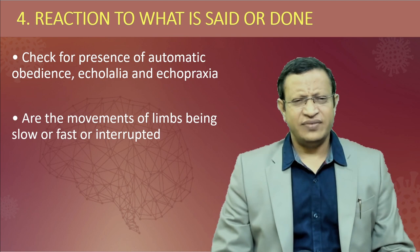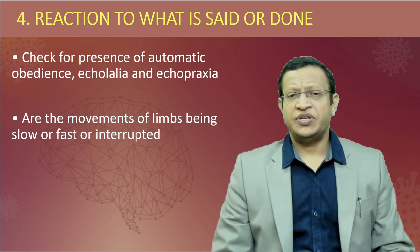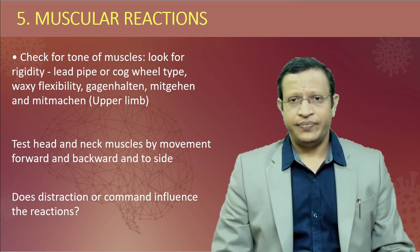Echolalia and echopraxia are called echo phenomena and are commonly seen in catatonia patients. Are the movements of the limbs slow, fast, or interrupted? Movements are fast in mania patients, slow in catatonia and depressed patients, and sometimes interrupted. In EPS, very slow movements can be seen.